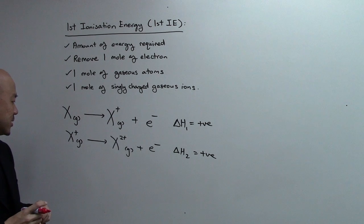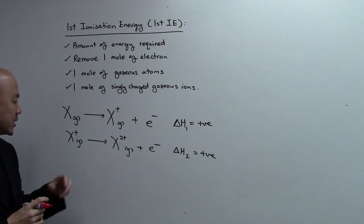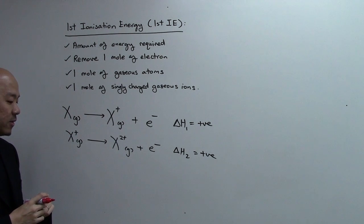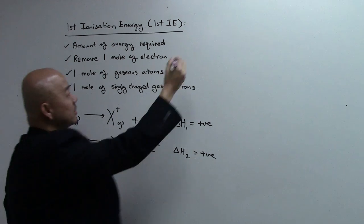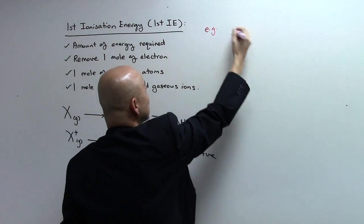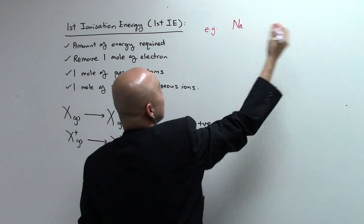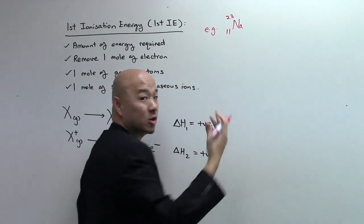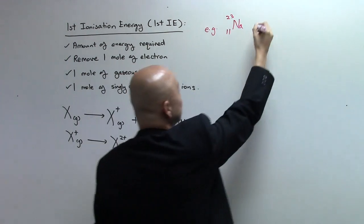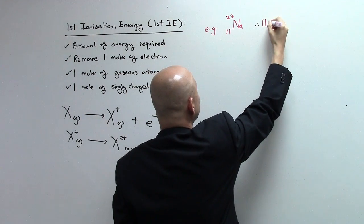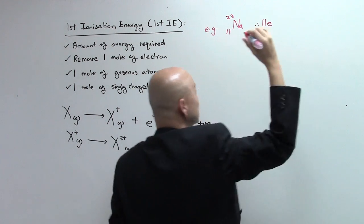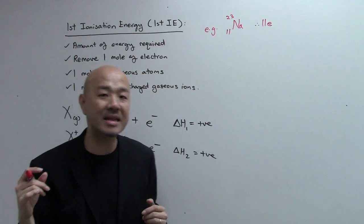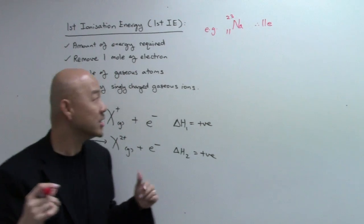Now, let me use an exact example from the periodic table. Let's use sodium. Sodium, the mass number is 23, the proton number or atomic number is 11, which means it has 11 protons, which also indirectly tells us we have 11 electrons.